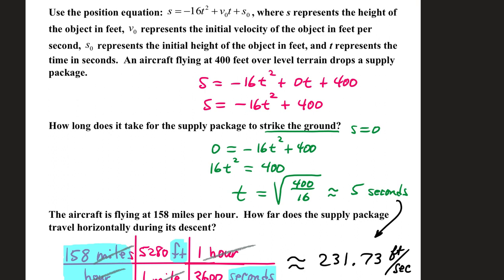How long does it take for the supply package to strike the ground? S equals 0 once it strikes the ground. 0 equals negative 16t squared plus 400. Let's move the negative term over, it will become positive. Divide by 16, so t squared equals 400 over 16. T will be the square root of that value, which is approximately 5 seconds.